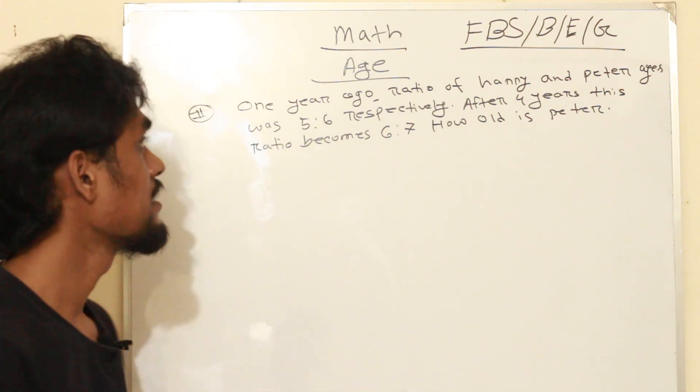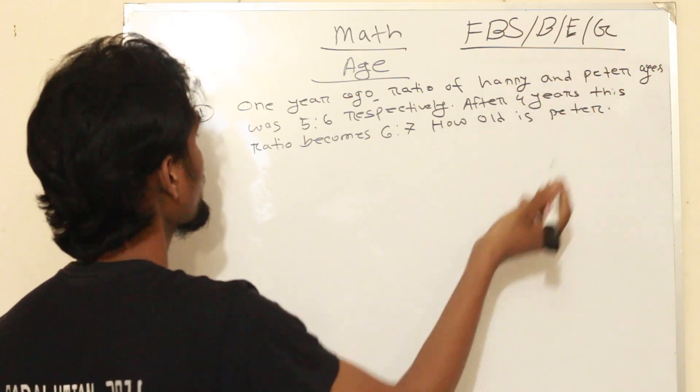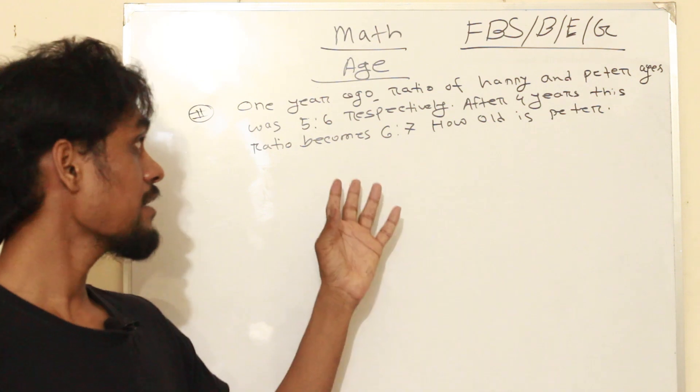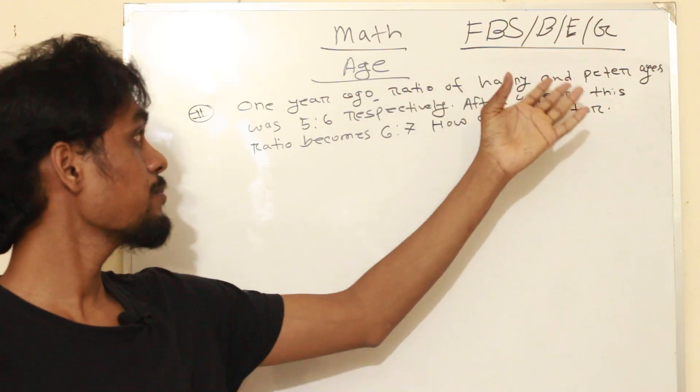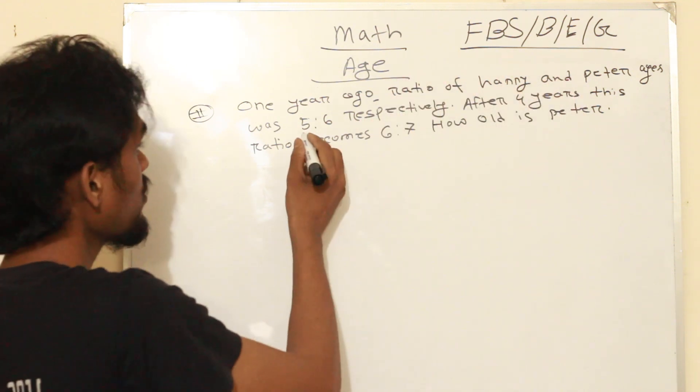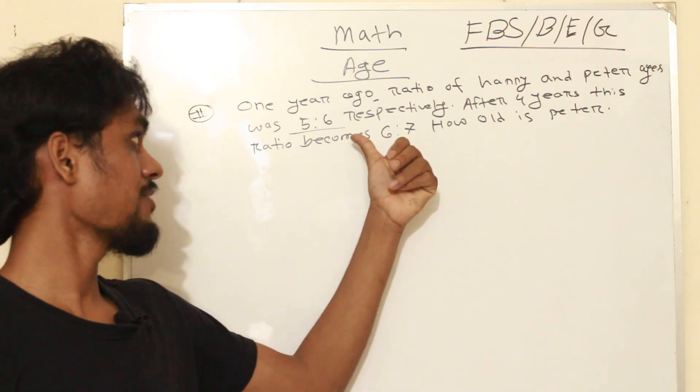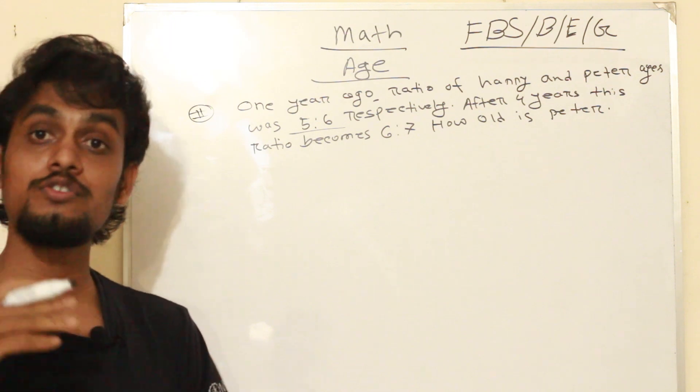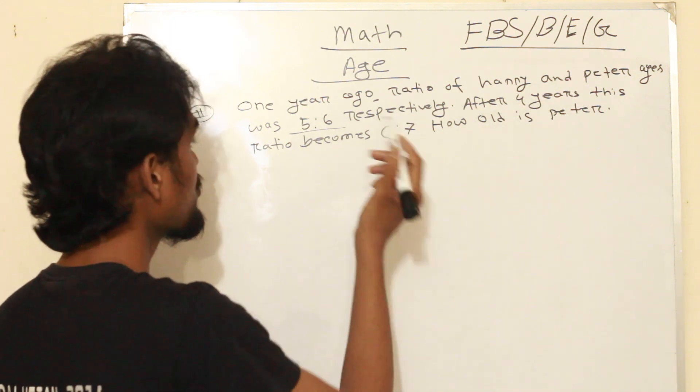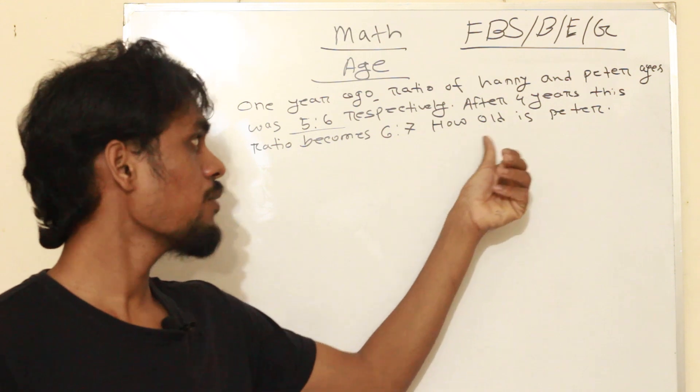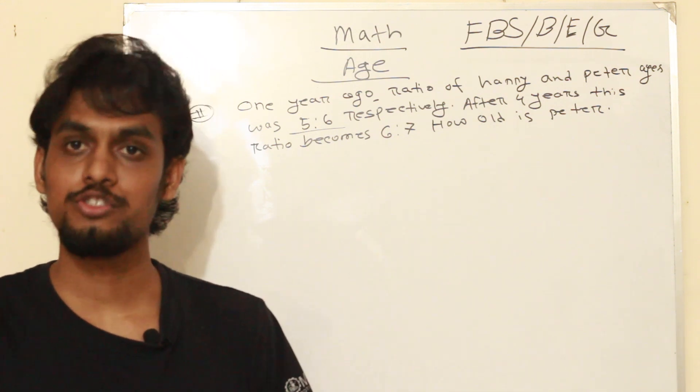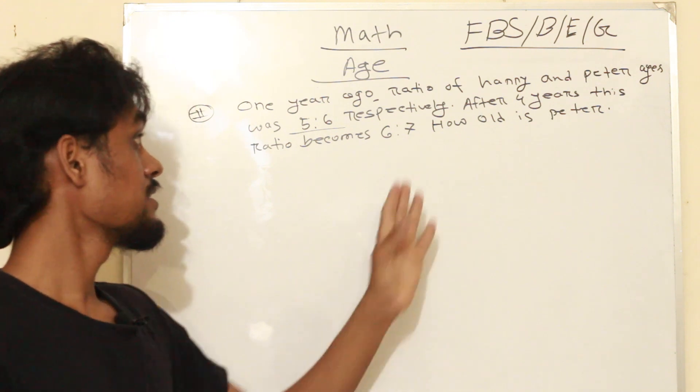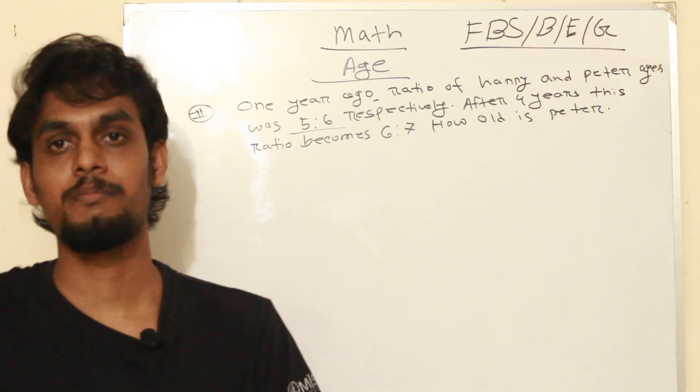That means Rahul's age is 27.5. Third problem: One year ago, the ratio of Harry and Peter's age was 5 to 6. One year ago Harry and Peter's ratio was 5 to 6, respectively. After 4 years this ratio becomes 6 to 7. How old is Peter?